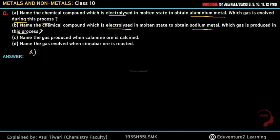Question 3: Name the gas produced when calamine ore is calcinated and then roasted. Question 4 is also related to gas evolved. Here are 4 questions in total.